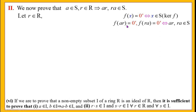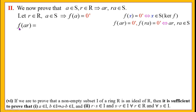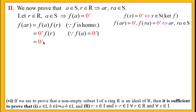Let r belong to R and a belong to S. Since a belongs to S, which is the kernel of f, we have f(a) = 0'. Now consider f(ar). Since f is a homomorphism, f(a · r) = f(a) · f(r). But f(a) = 0', so this equals 0' · f(r) = 0'. Thus f(ar) = 0', which implies ar belongs to S, for all r in R and a in S.